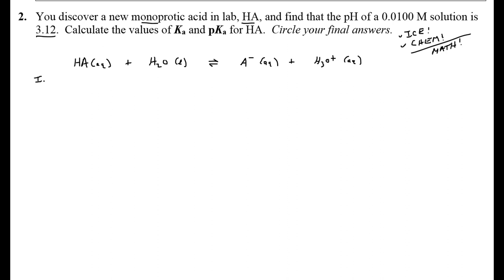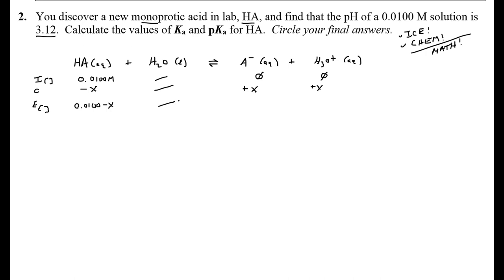We've got our initial molar concentrations, and initially I've got 0.0100 molar. With water, we don't really worry about that. We did not put in any of the products initially, so for our change we're going to have to form at least a little bit of product. So: minus X for the acid, we don't care about water, plus X for the anion, plus X for hydronium. Remember, we have to go at least a little bit in the forward direction to establish equilibrium. Then finally the equilibrium concentrations: 0.0100 minus X for the acid, we had none of the anion to begin with so that's X, and the same for hydronium — X.